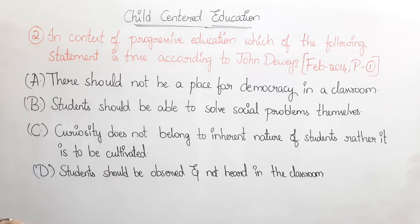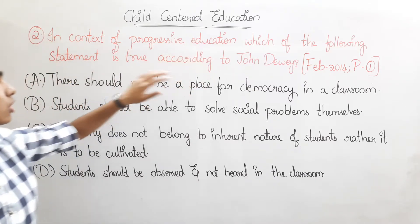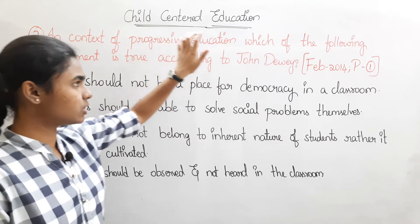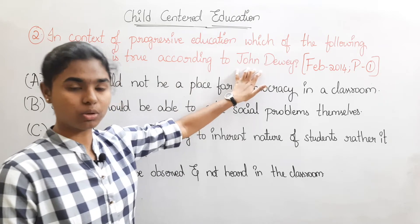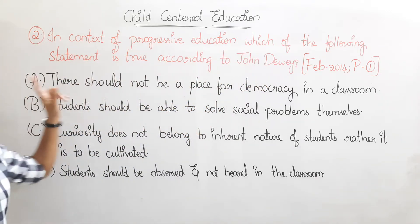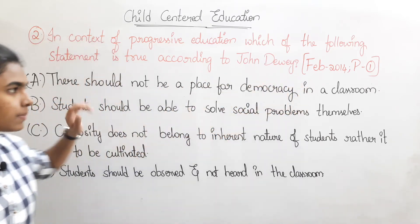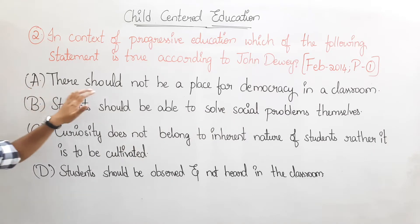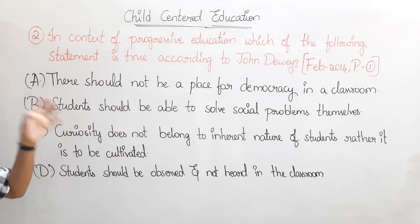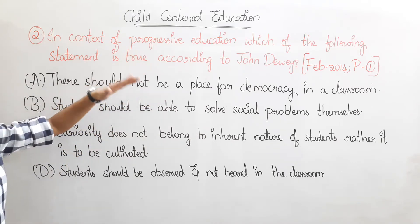The second question is: in the context of progressive education, which of the following statements is true according to John Dewey? This question is from February 2014, Paper 1. Option A: there should not be a place for democracy in a classroom.